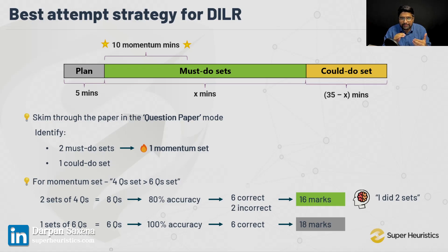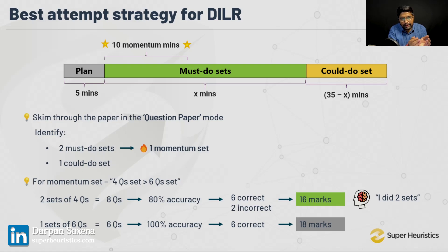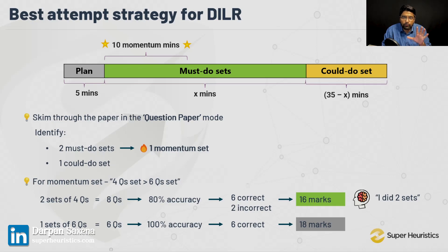When you walk into your third set having completed two sets already, your mind says 'I did two sets' — that's a very different game. Completing a set gives you a sense of completeness, a fire, a different kind of speed and freshness. So I would advise you to err on the side of completeness. Try to solve two 4-question sets aiming for 100% accuracy, because the 4-question sets have generally been easier. Psychologically, your psyche is very important for DILR — it's a section of temperament.